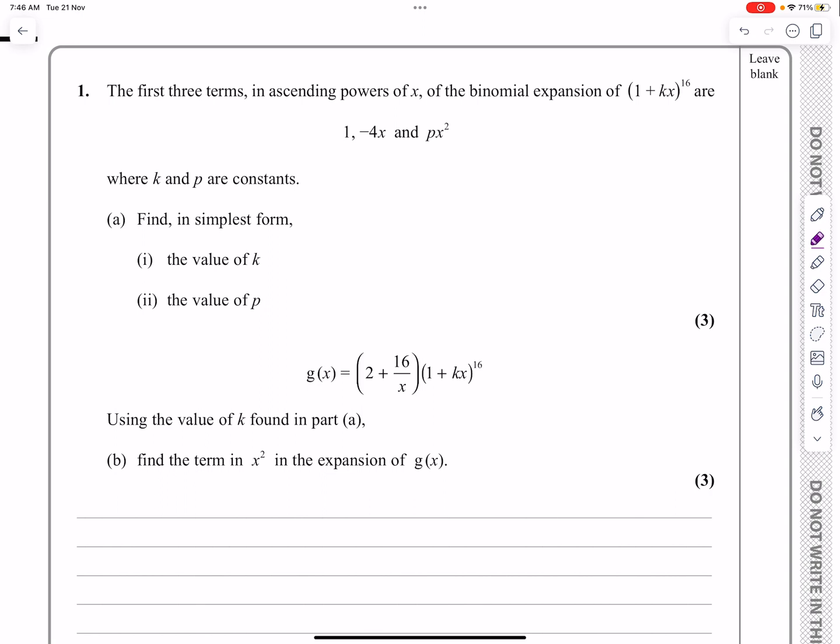So binomial expansion, let's just read it. It says we've got the binomial expansion of (1 + kx)^16, and it's telling me that the first three terms are 1 - 4x and px². We've got to try and work out what k is and what p is, so in other words, we've got to multiply out this expansion here and then see what we get and compare.